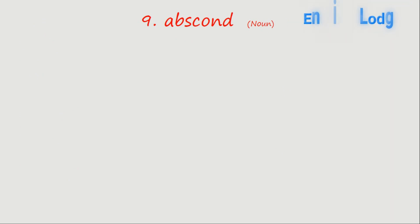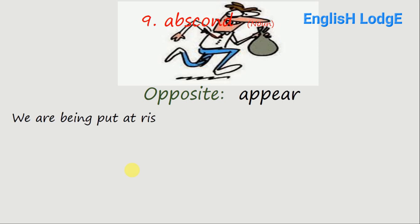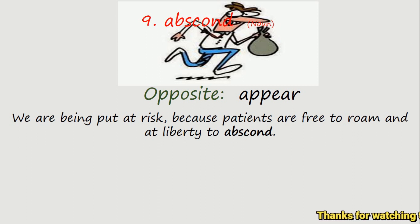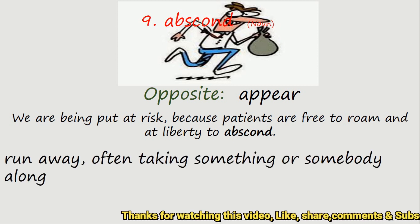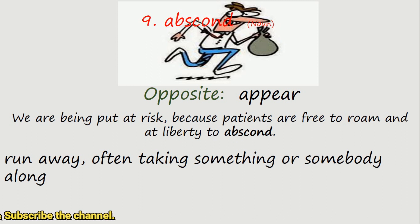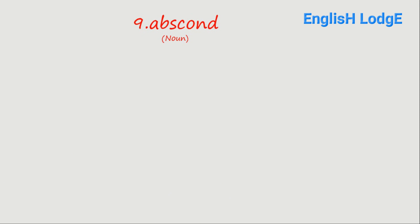Word number nine: abscond. And this is a noun. The image is given for you to get the meaning of the word, and the opposite word is appear. Sentence: 'We are being put at risk because patients are free to roam and at liberty to abscond.' So the meaning of the word abscond: ran away, often taking something or somebody along.